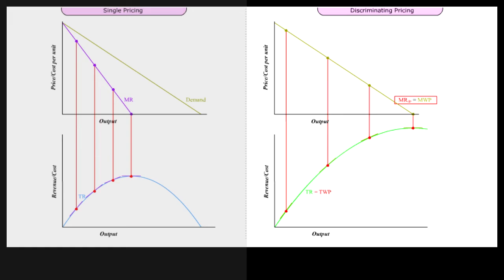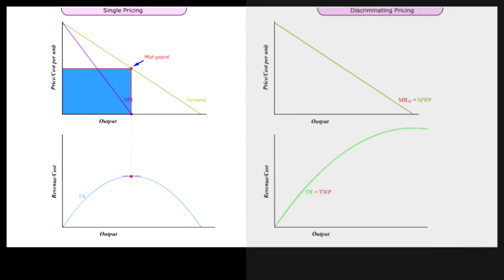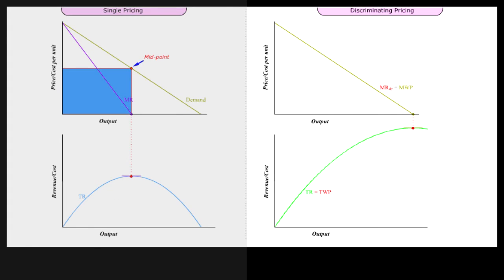MRDP is the same as the marginal willingness to pay, MWP. TR reaches its maximum when MRSP is equal to 0, which happens at the midpoint down the straight line demand curve. TWP reaches its maximum when MRDP is 0, which happens at the end of the demand curve, MWP.